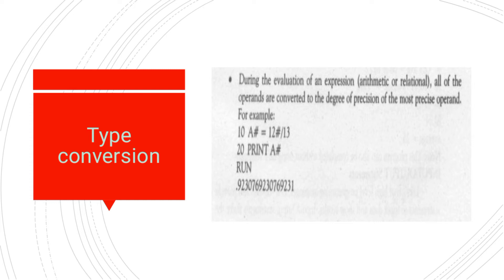Here we have another example for rule two: during the evaluation of an expression, all operands are converted to the degree of precision of the most precise operand. The hash sign used with a variable indicates a double precision variable. In double precision, the stored value can have up to 17 digits. In single precision, the value has up to 8 digits. When 12 is divided by 3, the result is evaluated at double precision.